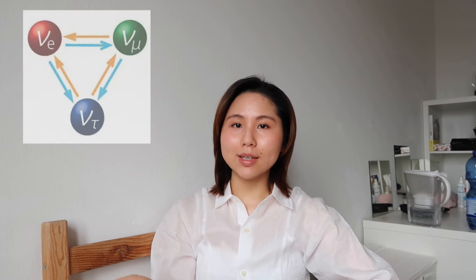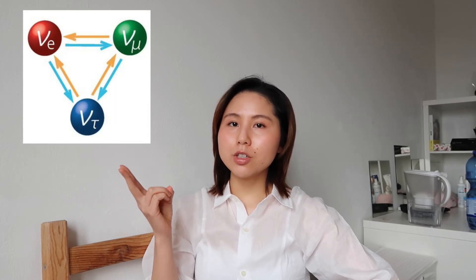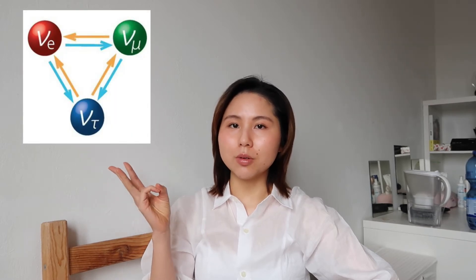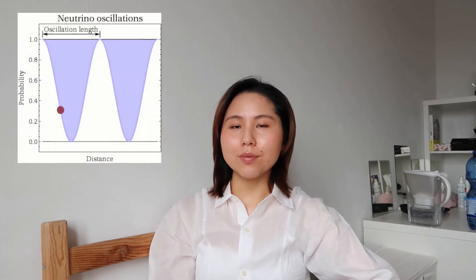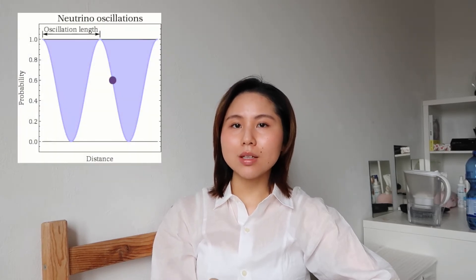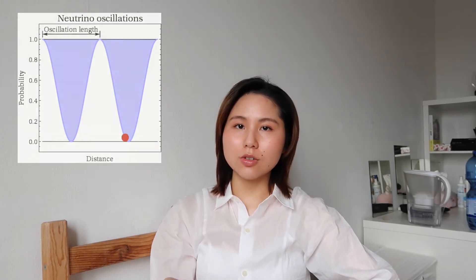Based on the existing charged leptons, we know that there should exist the electron neutrino, muon neutrino, and tau neutrino. Now, what is neutrino oscillation? It is basically a phenomenon where the neutrino undergoes flavor transition during propagation over large distances.